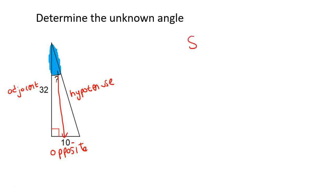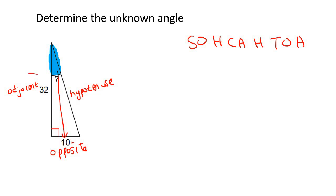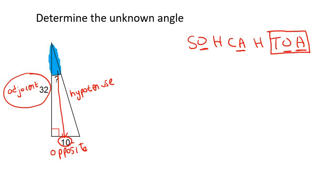Next, write down SOH-CAH-TOA. Have a look at what you have. We don't know one side — there's no number there. But we know there's a 32 and a 10. So we have the adjacent, and we also have the opposite, which is 10. That means we are going to use tan, because we have the opposite and the adjacent.